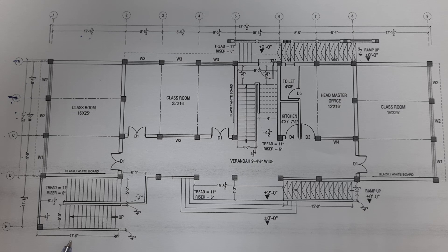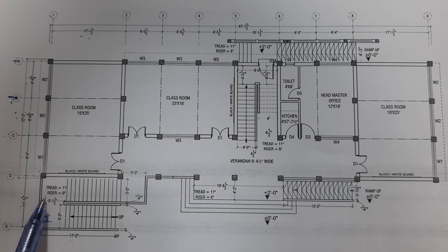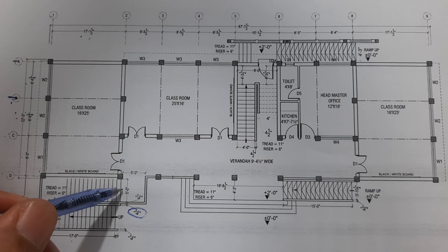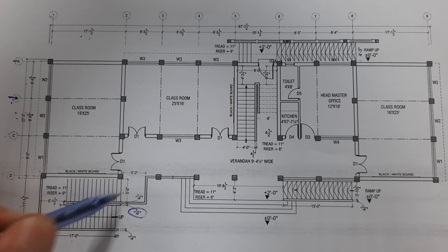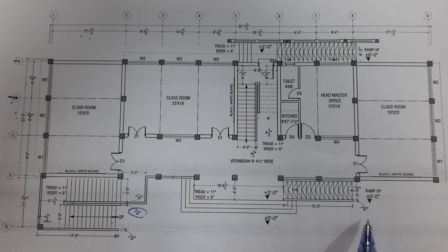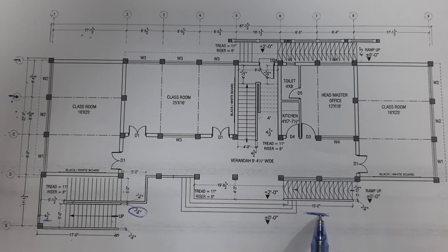For the staircase, which is 17 feet: the wall thickness is 4.5 inches, tread is 11 inches, and riser is 6 inches. The handrail spacing is 4.5 inches. Each flight width is 5 feet, and there is also a ramp with a length of 15 feet.